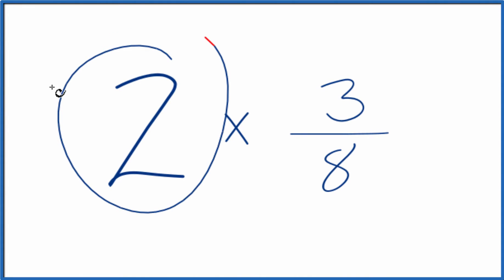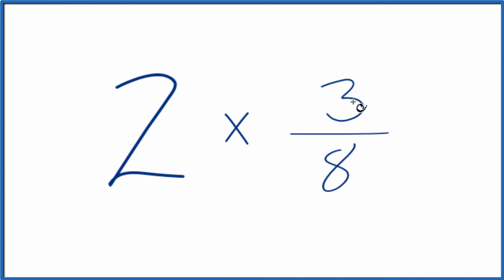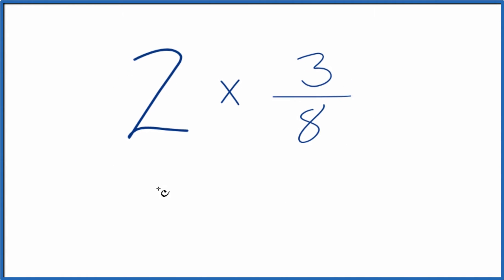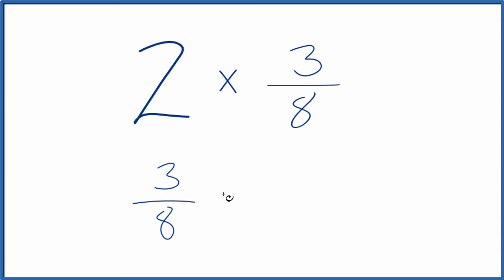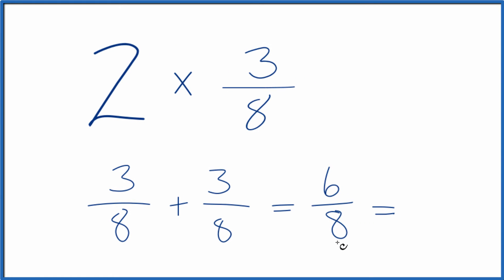Here's how you can multiply 2 times 3 eighths. First off, you could just add 3 eighths plus 3 eighths. We have 2 three-eighths, and we add them together. When adding fractions, if the denominator is the same, we keep that the same and add the numerators. 3 plus 3 is 6, so 2 times 3 eighths equals 6 eighths. Since these are both even numbers, we can divide both of them by 2.